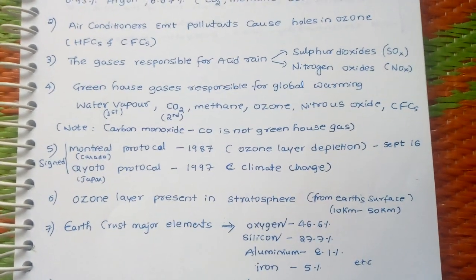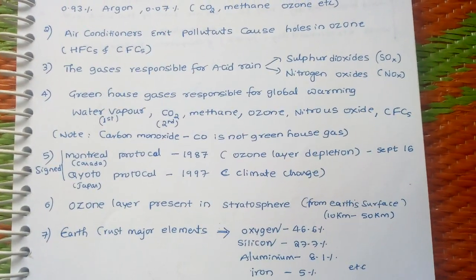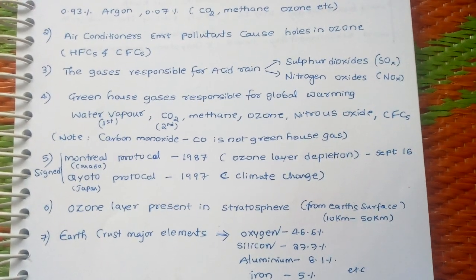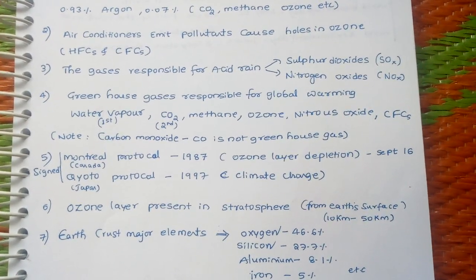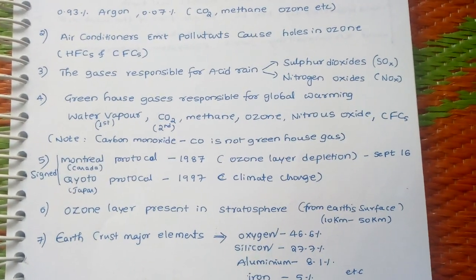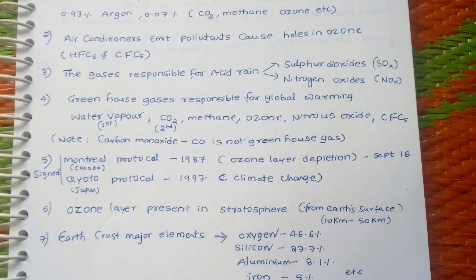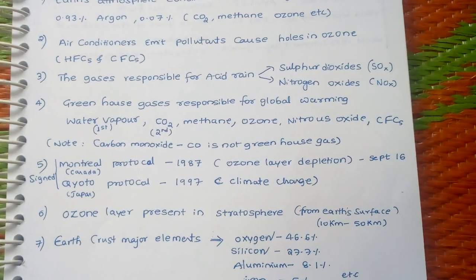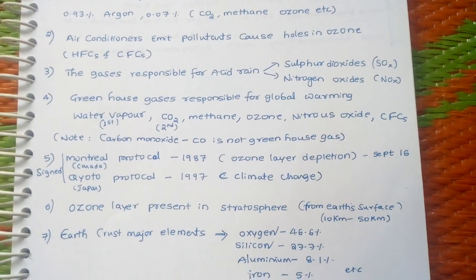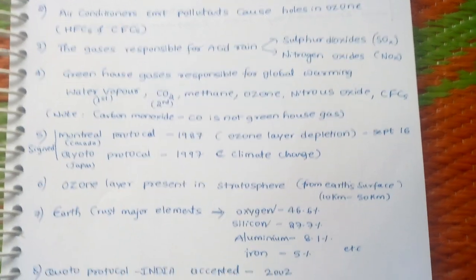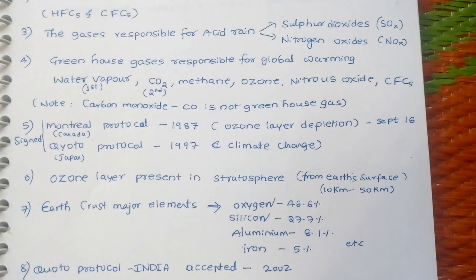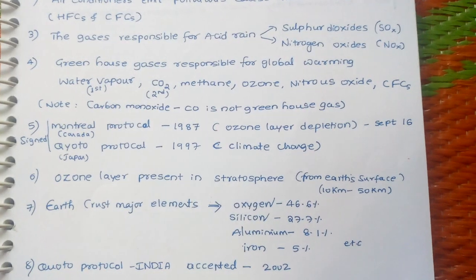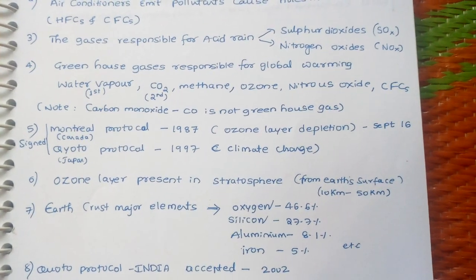Greenhouse gases responsible for Global Warming include: the major gas is Water Vapor. Other than Water Vapor, Carbon Dioxide is consumed mainly, then Methane, Ozone, Nitrous Oxides, and CFCs. Note: Carbon Monoxide is NOT a Greenhouse Gas — this is important to remember.